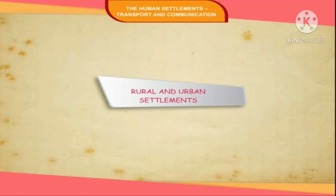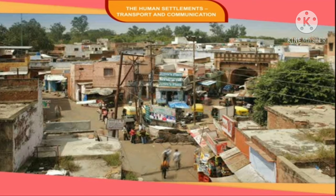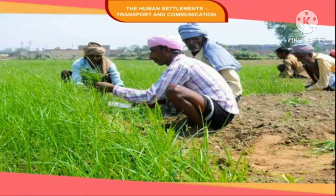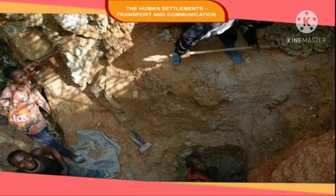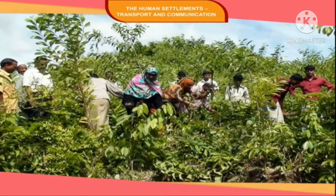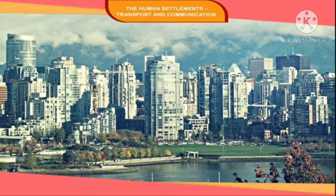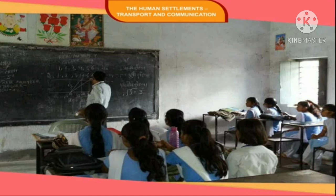Rural and Urban Settlements: On the basis of the type of occupation practiced by its inhabitants, settlements may be rural or urban. In rural settlements, most of the people are engaged in primary occupations like agriculture, mining, fishery, and forestry. The products are derived directly from nature. Villages are examples of rural settlements. In urban settlements, people are engaged in secondary and tertiary occupations. They either work in industries or provide services like health and education. Towns and cities are examples of urban settlements.